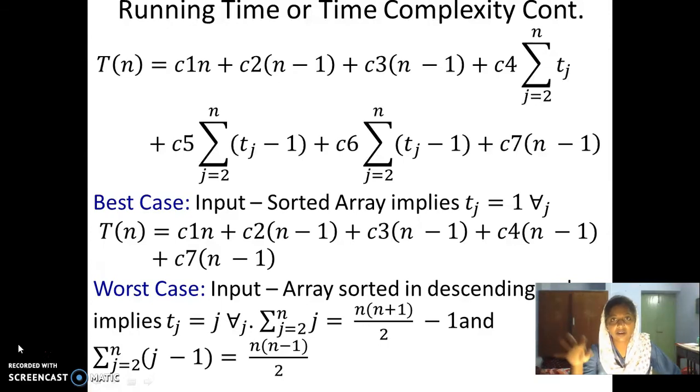When we simplify all these things, we can have tn equal to a times n squared plus b times some n and plus c, a constant, a quadratic equation in terms of the input size which is n.